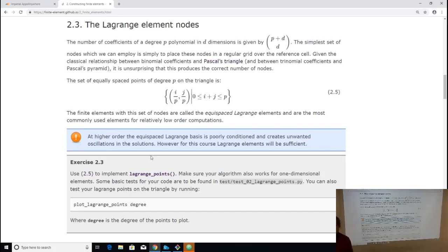A simplex is the n-dimensional triangle. So an interval is a simplex, a triangle is a simplex, a tetrahedron is a simplex, and it keeps going up through the dimensions. If you have a d-dimensional polynomial, then the number of dimensions you need is p plus d choose d.